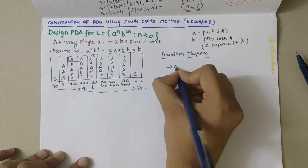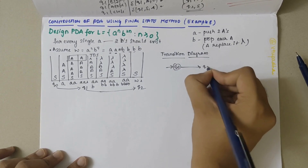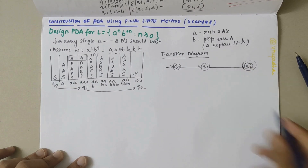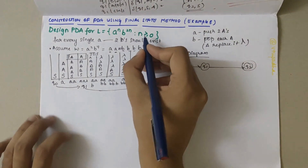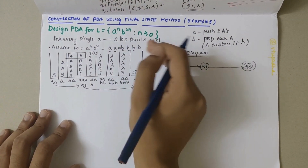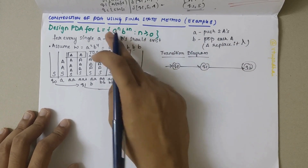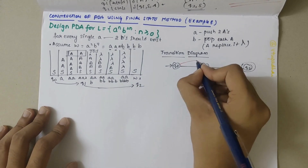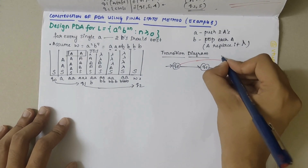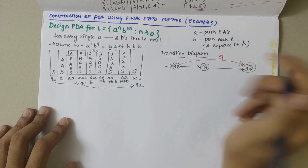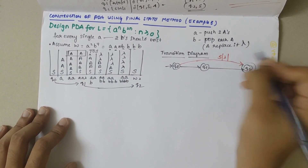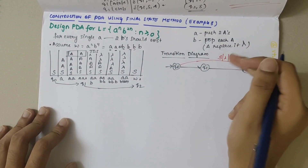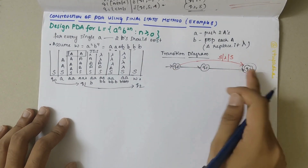Considering Q0 as the start state, Q1 as an intermediate state, and Q2 as the final state. For n=0 we get the language equal to lambda. So we can directly write a transition: initially on top of stack we had S, and when lambda was read the contents were the same (stack still empty), but it changed from Q0 to Q2.